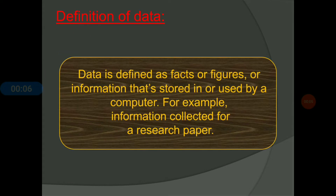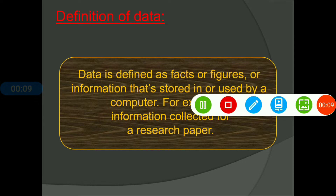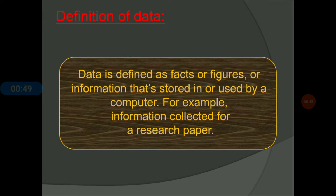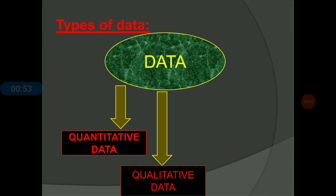Here we can see the definition of data. Data is defined as facts, figures, or information which is stored in or used by a computer. It refers to numerical figures or qualitative figures. For example, information collected for a research paper — the total amount of production of rice for different years needed for research — that information is called data.